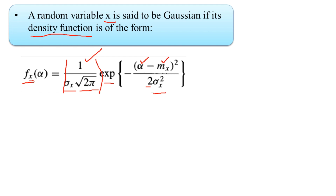In this mathematical representation, the probability density function f suffix X as a function of alpha is completely dependent on M X, the mean or expected value of the random variable, sigma suffix X squared, which is the variance, sigma suffix X, the standard deviation obtained as the square root of the variance, and pi, which is a constant. So the PDF is completely dependent on the mean and the variance.